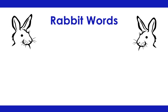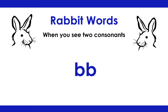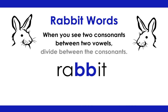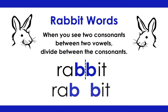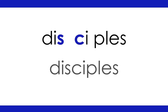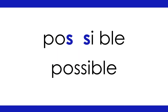Rabbit words. When you see two consonants between two vowels, divide between the consonants. Rabbit: Rab-bit. Practice words: Disciples. Possible. Garden.